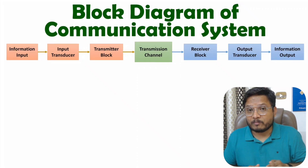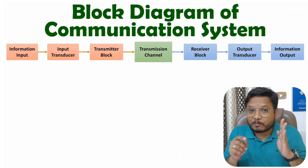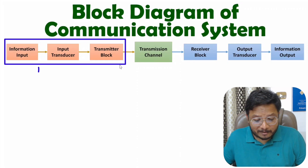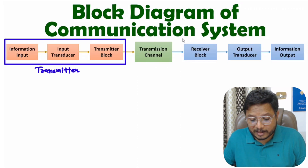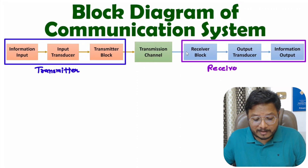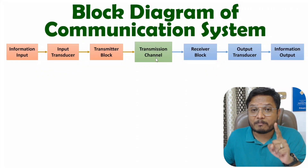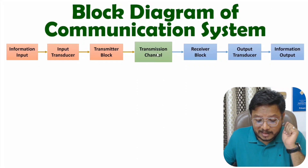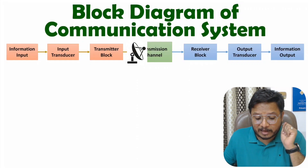In a communication system, the sender will be sending information to the receiver. We have the sender side and the receiver side. In between sender and receiver we have a transmission channel, which can be a wireless or wired transmission channel. If we have a wireless transmission channel, the sender will have an antenna transmitting electromagnetic waves to the receiver, which also has an antenna receiving those electromagnetic waves.